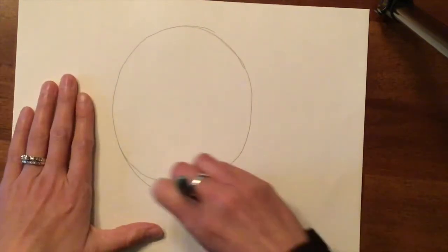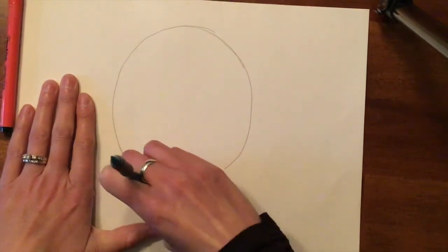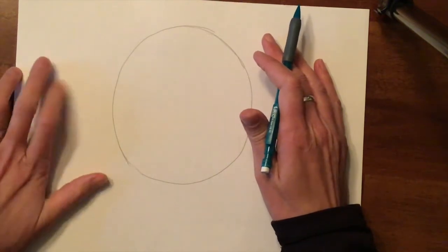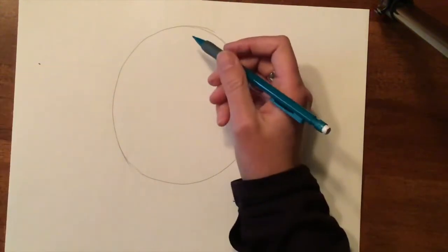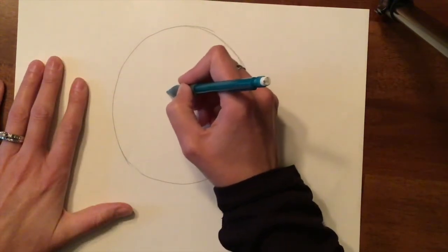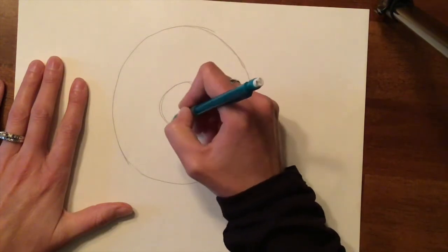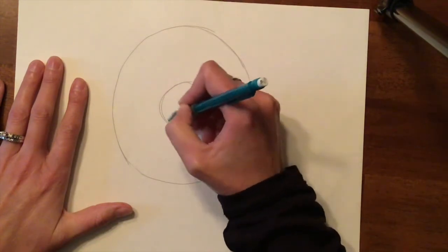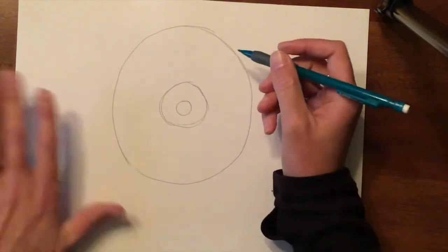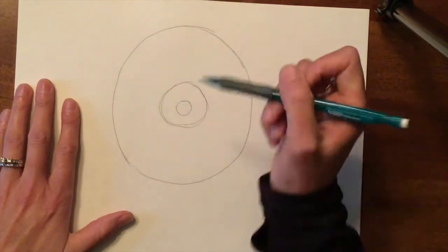So it looks something like that. And again, draw lightly because we all make mistakes. Okay. So you have your circle. Now inside that circle, kind of right in the middle of it, you're going to draw another circle and this one's going to be, oh, I'd say in between the size of a golf ball and a tennis ball. And then within that circle, you're going to make another circle. Okay. So you have one, two, three. Okay.